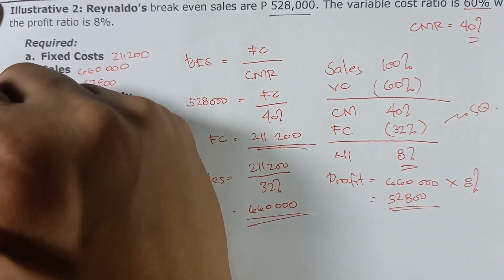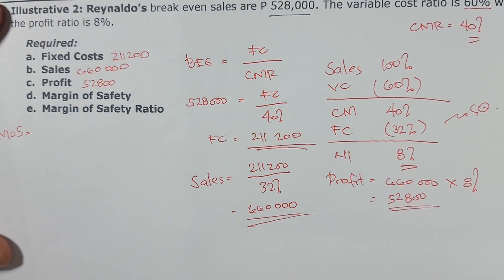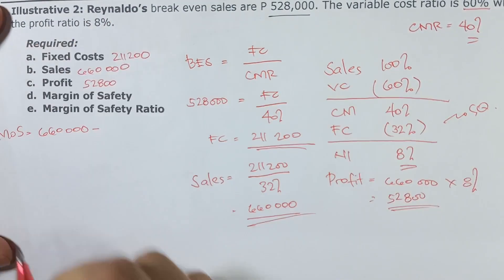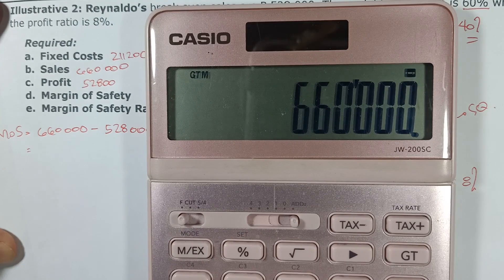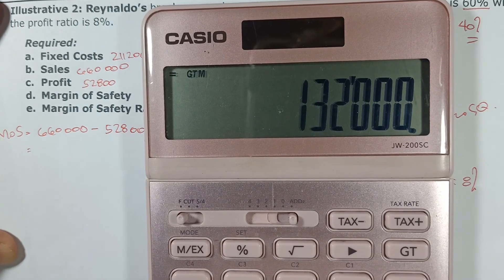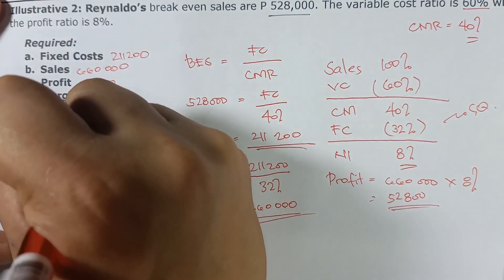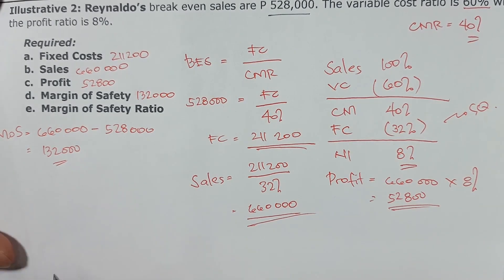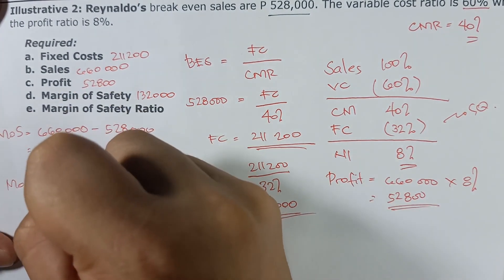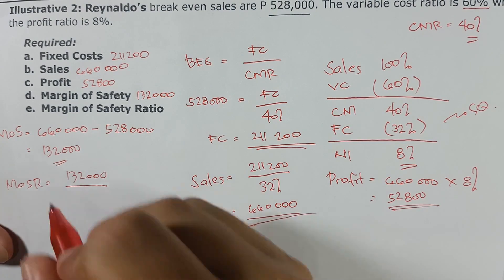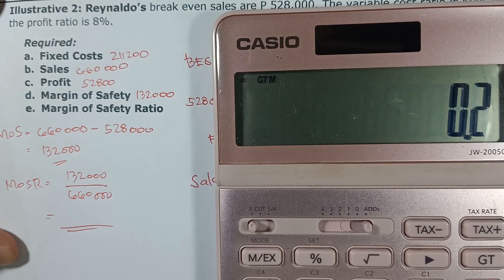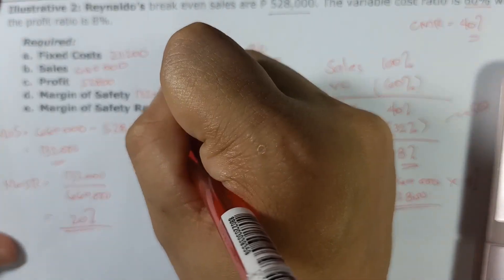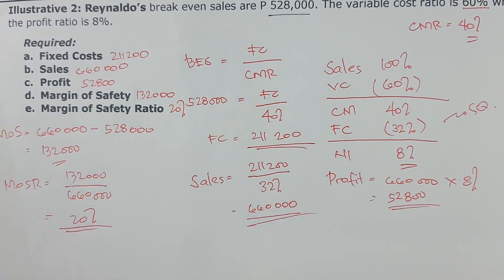Margin of safety equals planned or actual sales minus break-even sales: 660,000 − 528,000 = 132,000. Requirement letter D: margin of safety = 132,000. The margin of safety ratio = 132,000 ÷ 660,000 = 20%. Requirement letter E: margin of safety ratio = 20%.